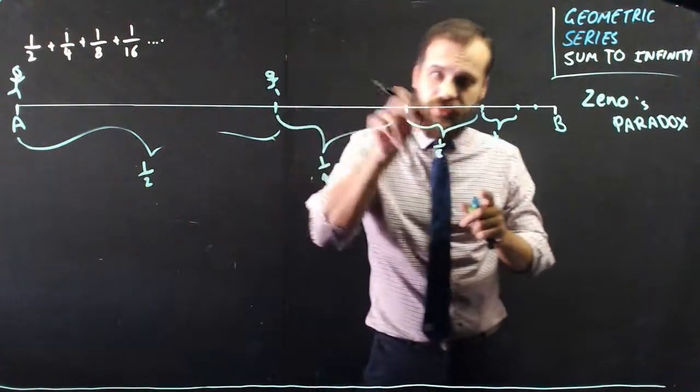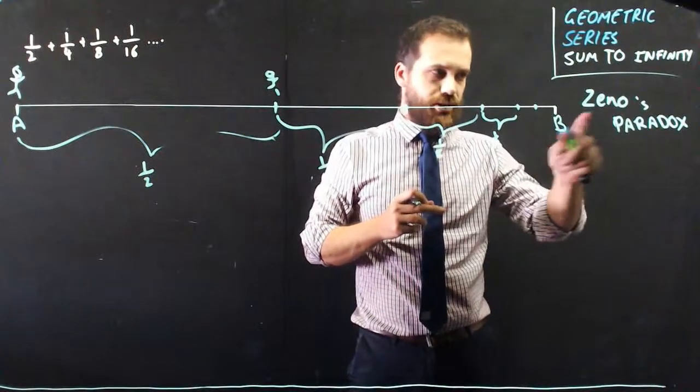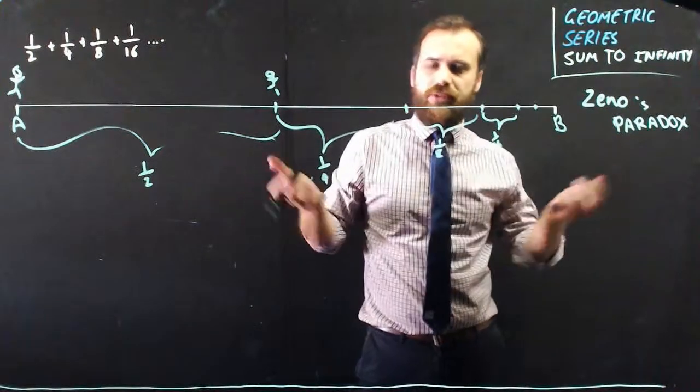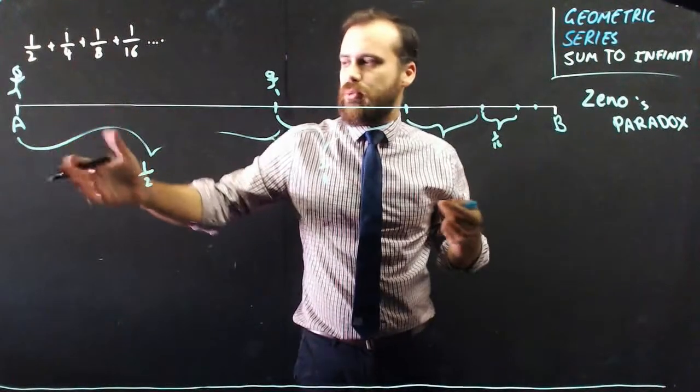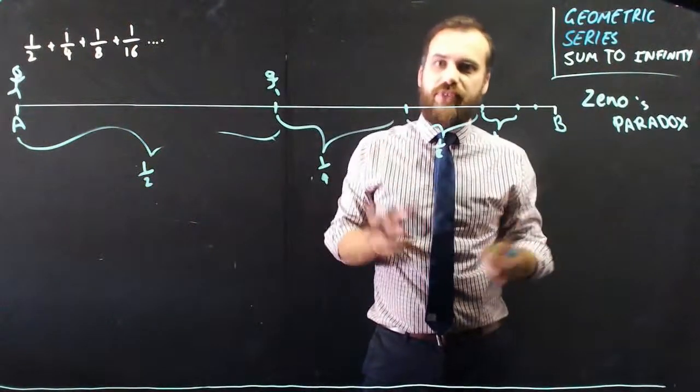But Zeno used to walk across a room every day of his life. He could easily walk from point A to point B whenever he felt like it.